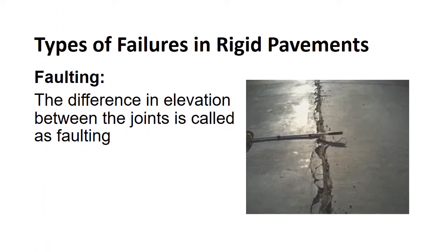Faulting is the difference in elevation between the joints. The causes are settlement of the pavement due to soft foundation, erosion of material under the pavement, and curling of slab edges due to temperature and moisture changes. Diamond grinding is used to restore the pavement if faulting reaches 4 mm.